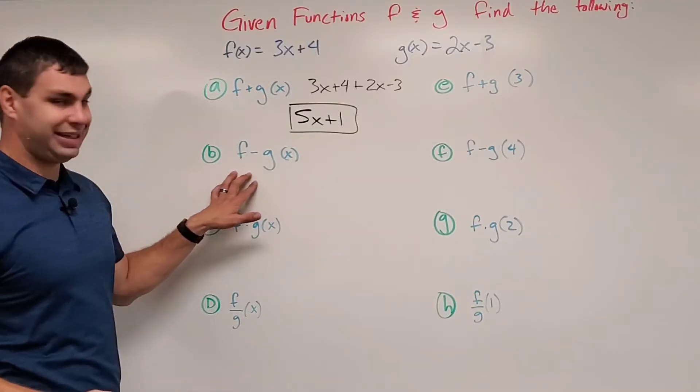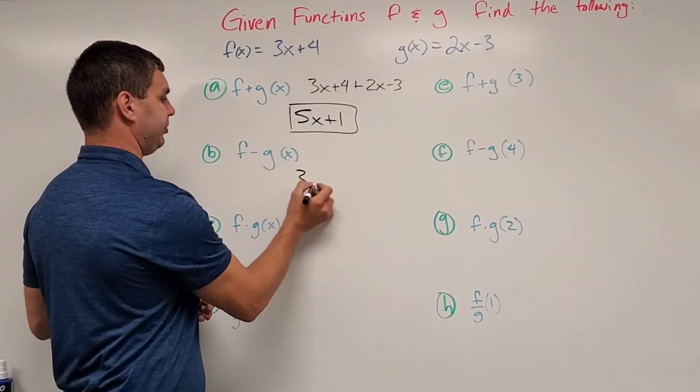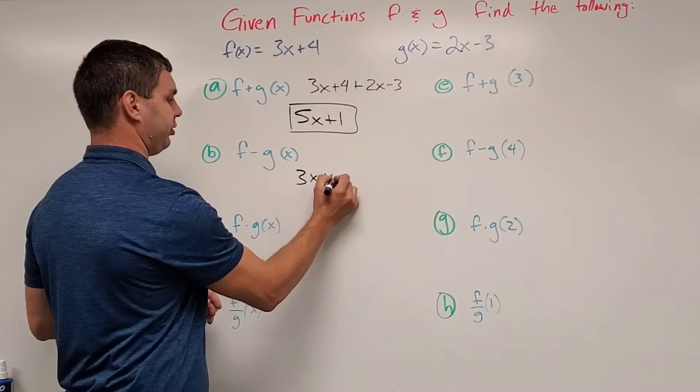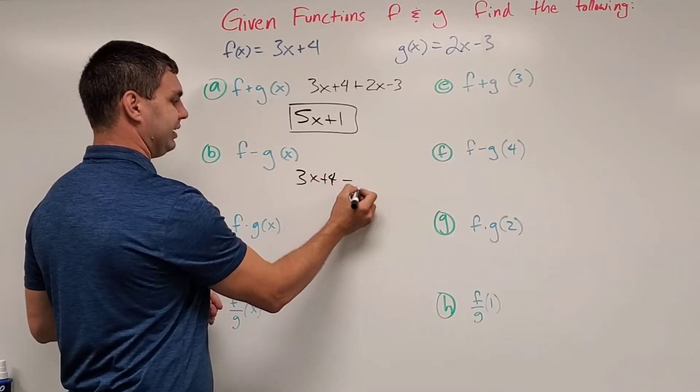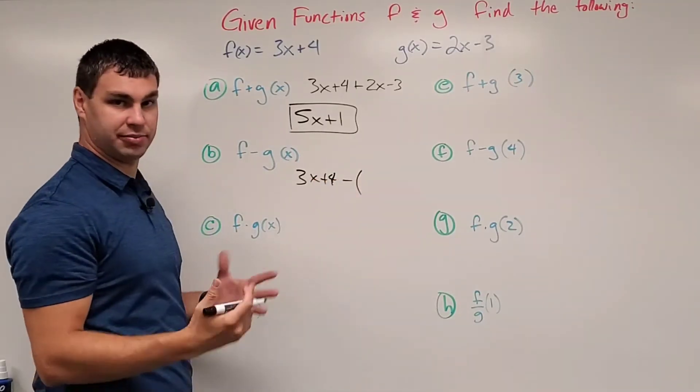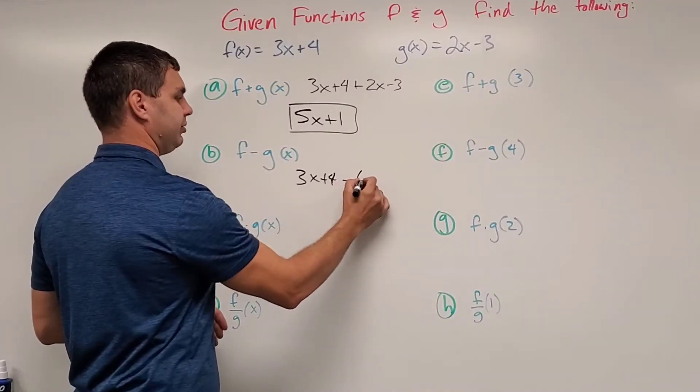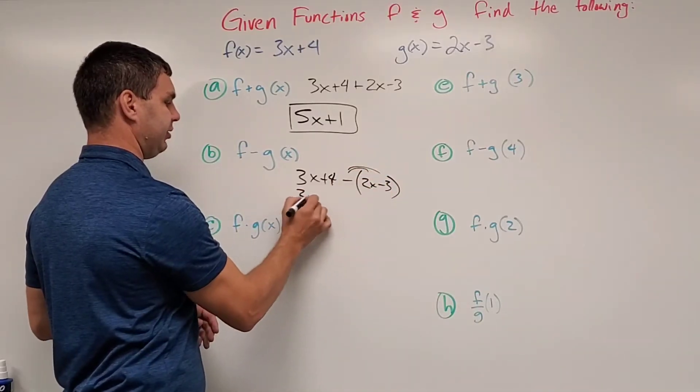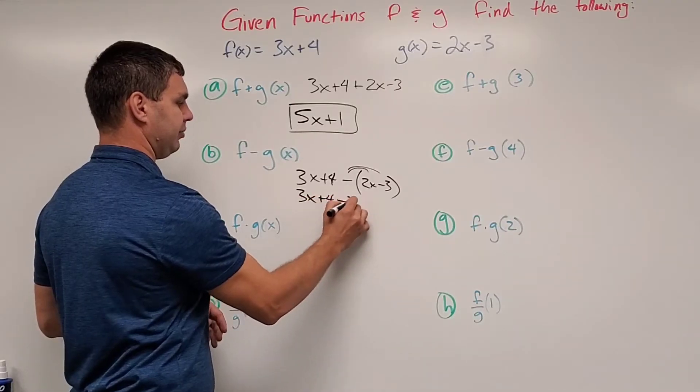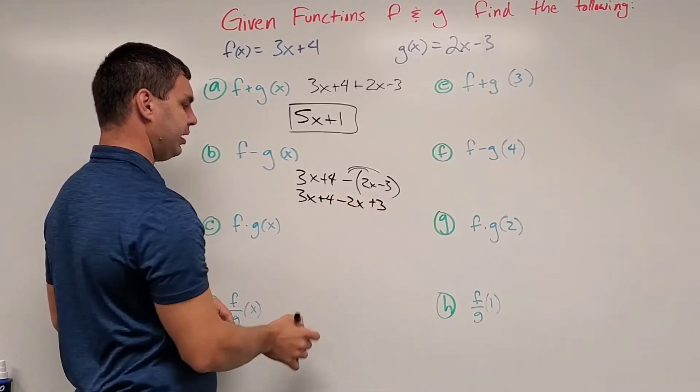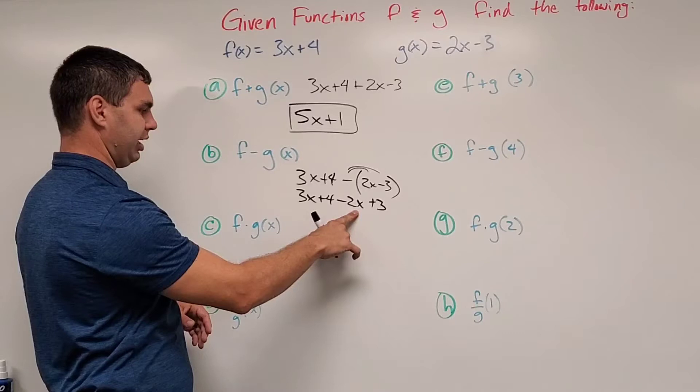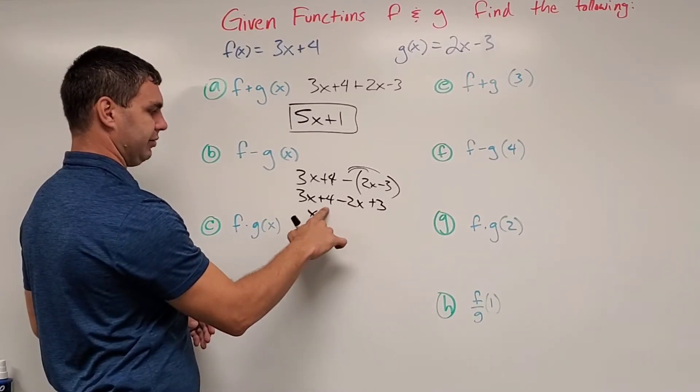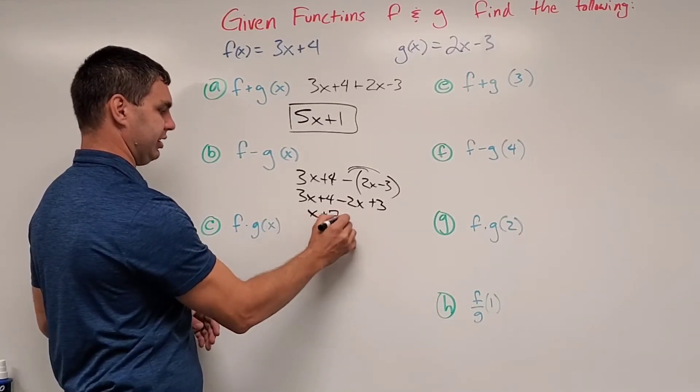For f minus g of x, same idea, I'd still take my f of x, 3x plus 4, but this time it's minus the g. So in parentheses, I'll put minus my g of x, 2x minus 3. And if I distribute this negative through, this gives me 3x plus 4 minus 2x plus 3. So this combines to be x and 4 plus 3 is 7. So this is x plus 7.